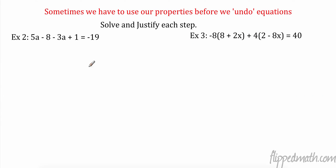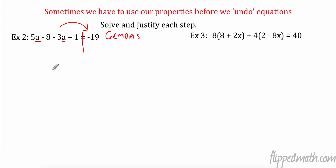All right, let's try another one. I'm going to write GEMDAS down and tick off stuff. The first thing we have to think about here is that we have a variable in two places. So the first thing we always have to do before we can do GEMDAS is simplify. When I simplify this side, I'm not doing the opposite — I only do the opposite when I go from one side to the other. I have 5a's minus 3a's, that is 2a. Negative 8 plus 1 is negative 7, equals negative 19.